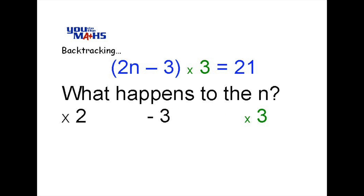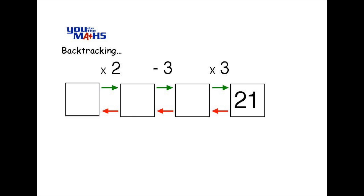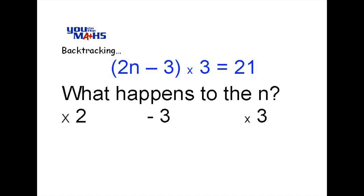The next operation is we multiply by 3. So once again we go back to the boxes and put the multiply by 3 above the last arrow. Always keep in mind the operations that you've applied to the letter you're trying to find.